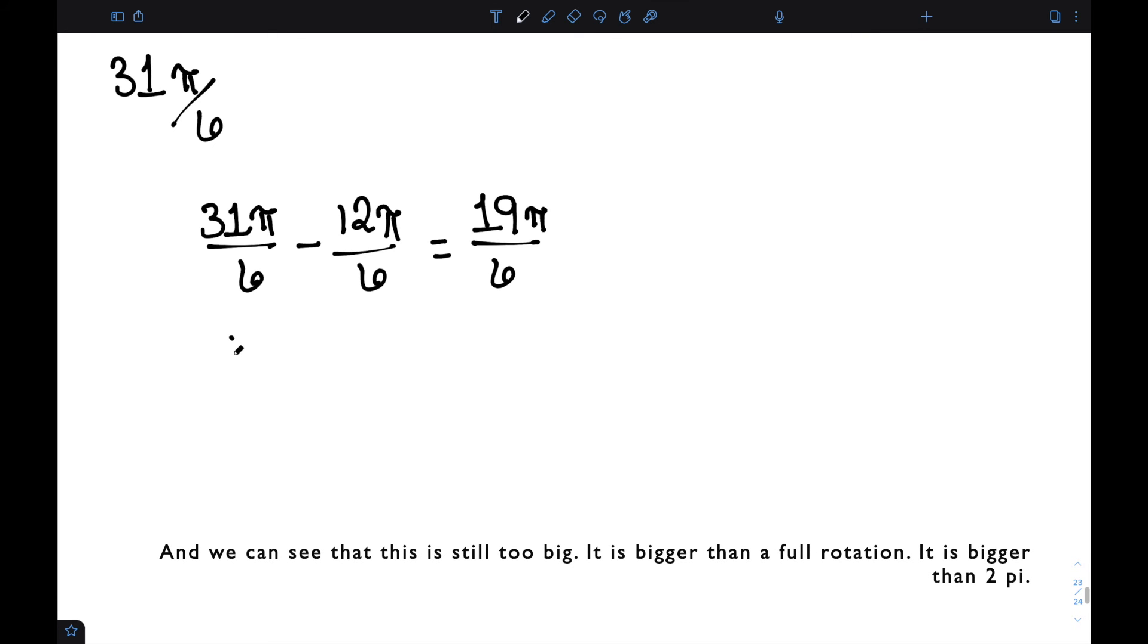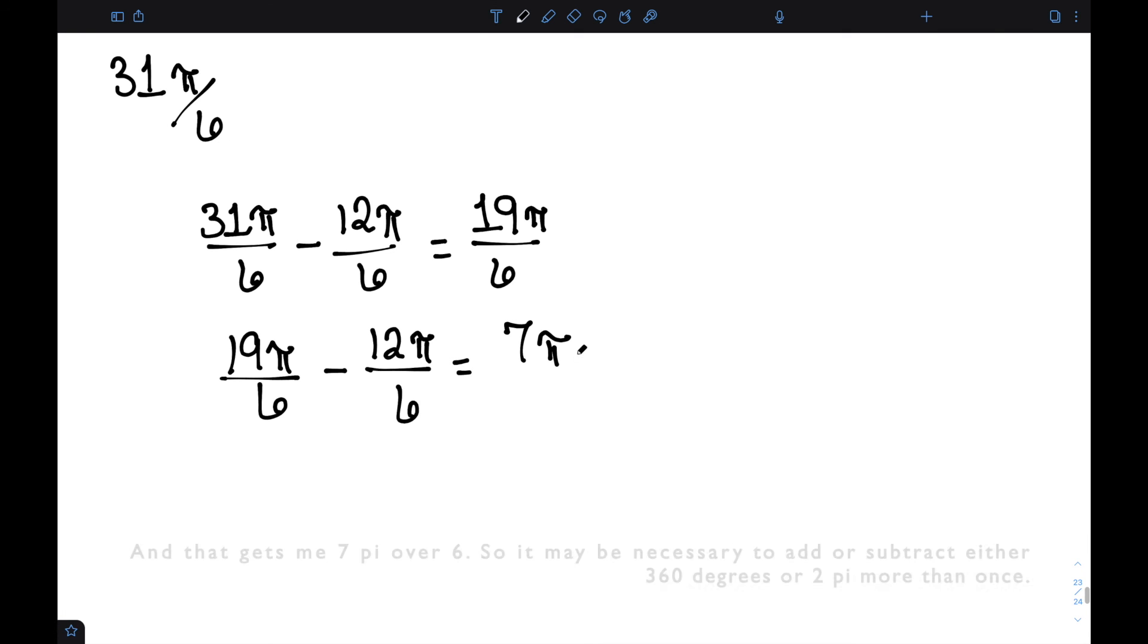And we can see that this is still too big. This is still bigger than a full rotation. It's bigger than 2 pi. So I'm going to remove a second 2 pi. I'm going to remove a second full rotation. And that gets me 7 pi over 6. So it may be necessary to add or subtract either 360 degrees or 2 pi more than once.